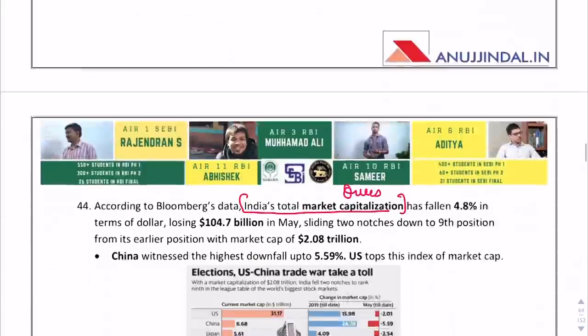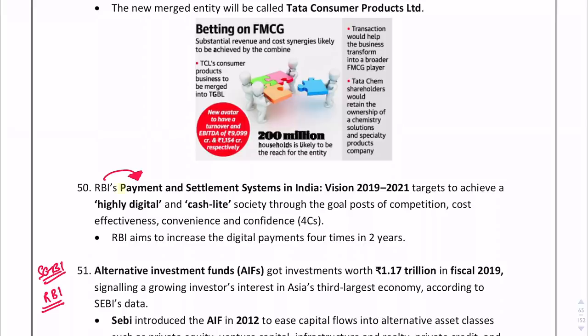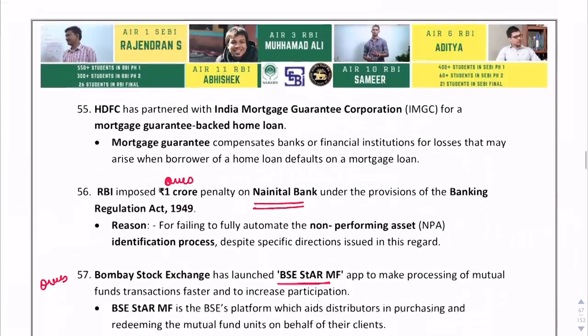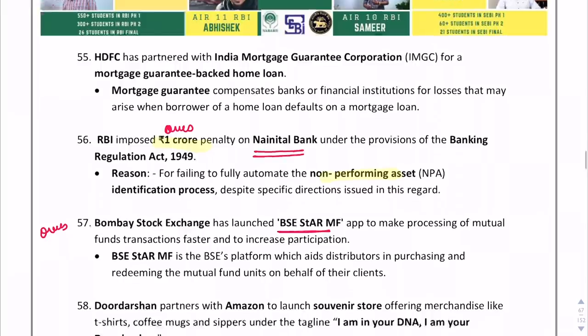India's total market capitalization stands at $1.62 trillion. The Payment and Settlement Systems in India Vision 2019–2021 has been released by RBI. RBI imposed a ₹1 crore penalty on Nainital Bank for not fully automating the non-performing asset identification process.